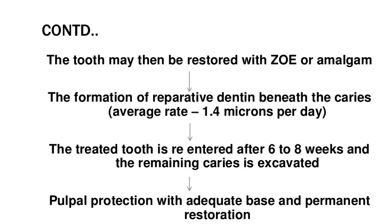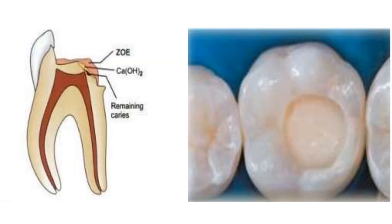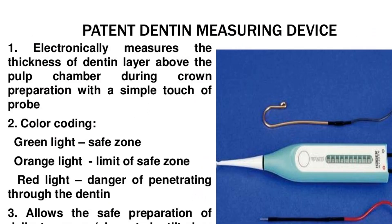The tooth may then be restored with ZOE or amalgam. The formation of reparative dentin beneath the caries occurs at an average rate of 1.4 microns per day. The treated tooth is re-entered after 6 to 8 weeks and the remaining caries is excavated, with pulpal protection with adequate base and permanent restoration. If the restoration has a good margin and at the recall visit a layer of secondary dentin is evident, re-entry is not necessary.